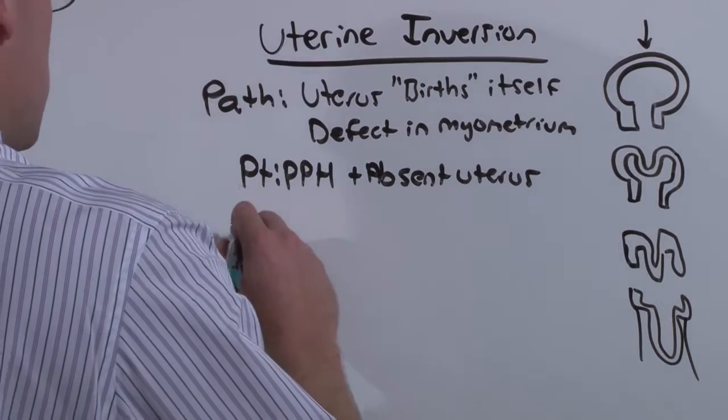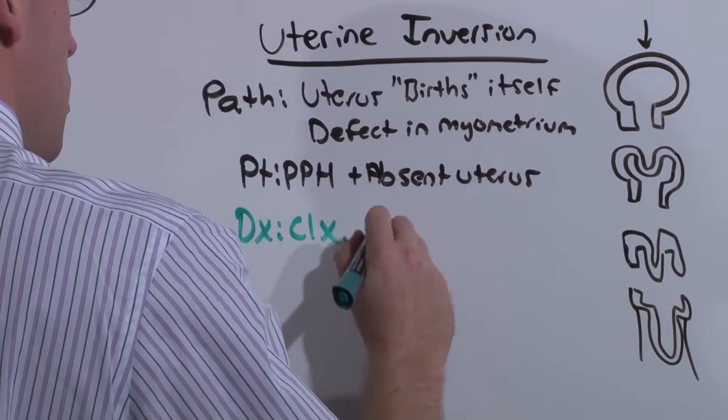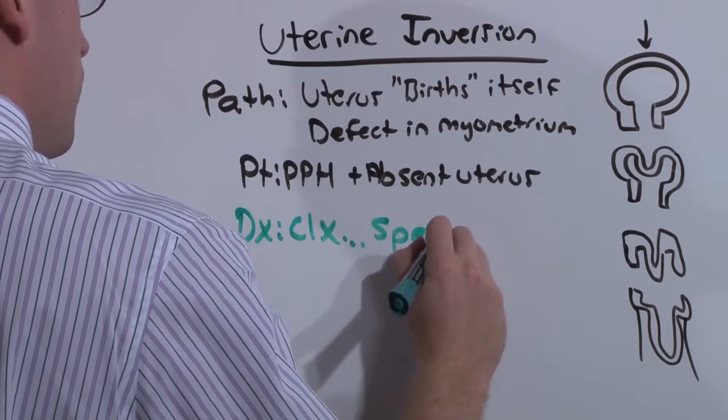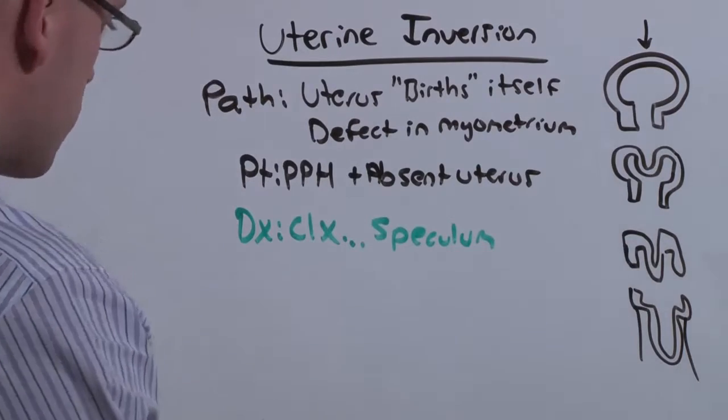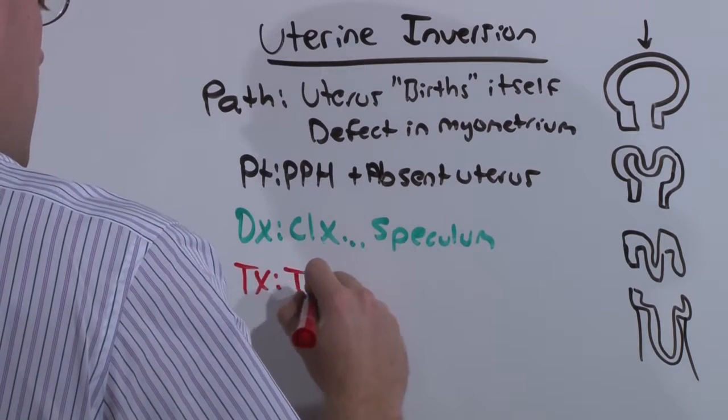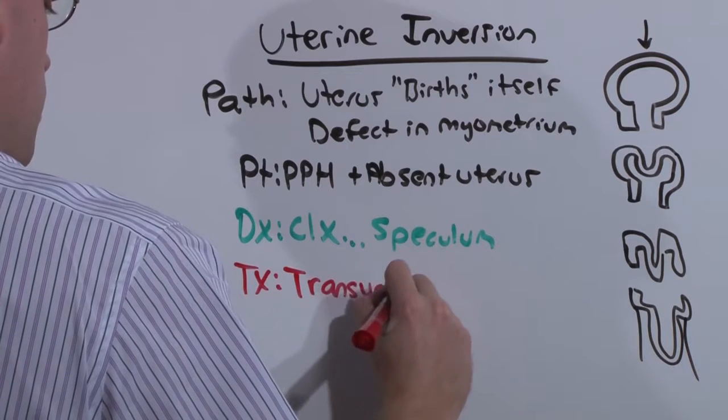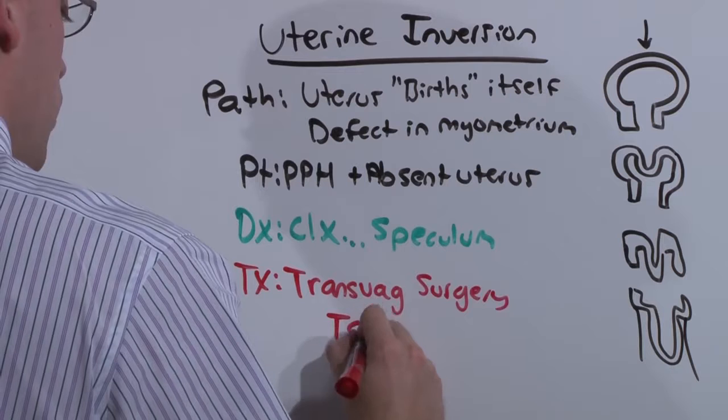And you can diagnose this clinically. Obviously you're going to have an absent uterus. But if you do the speculum exam, you're going to see the back of the uterus looking at you. The treatment for this is to do a transvaginal tacking. It's transvaginal surgery where you essentially tack down the fornices.